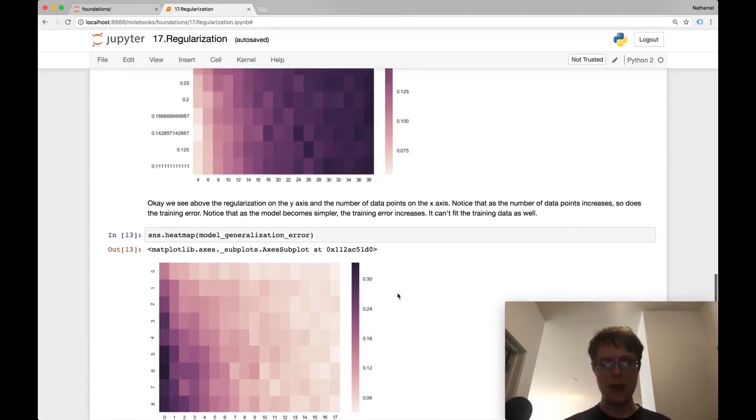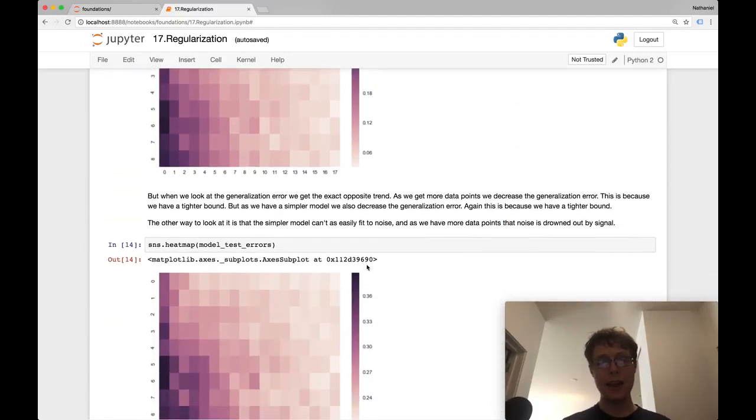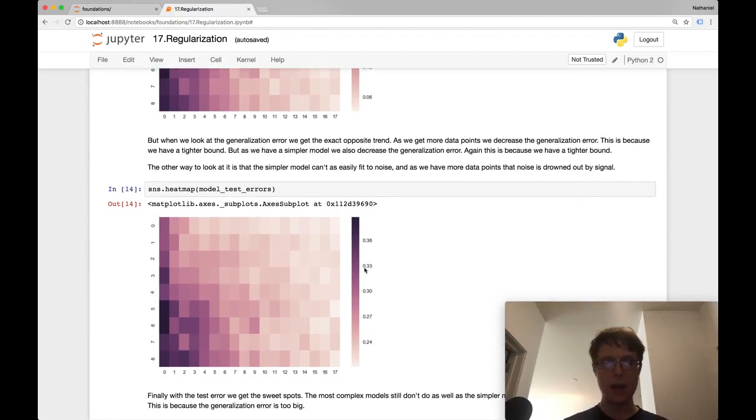As we increase the regularization, we decrease the generalization error. As we increase the number of points, we decrease the generalization error. The test error is the addition of these two heat maps. You just got to find the sweet spot. In this case, the sweet spot is pretty high regularization with a good number of data points. As you increase the data points, the test error is going to decrease.